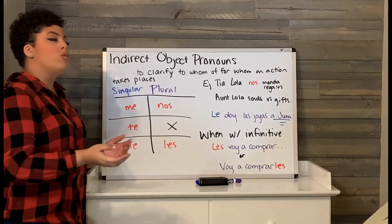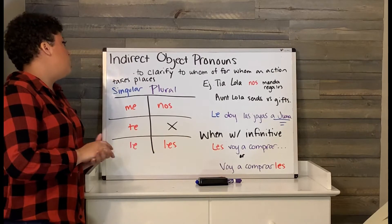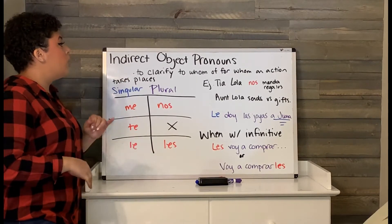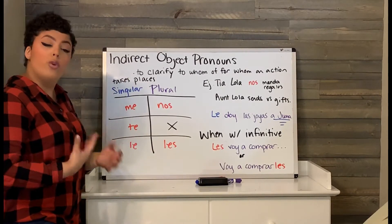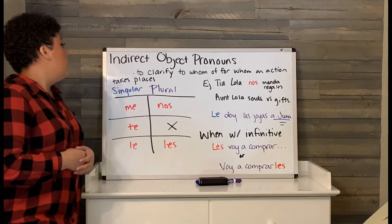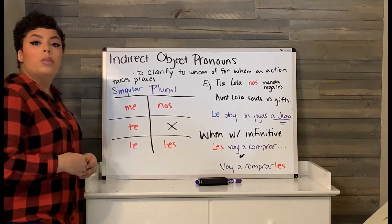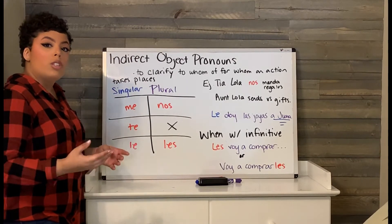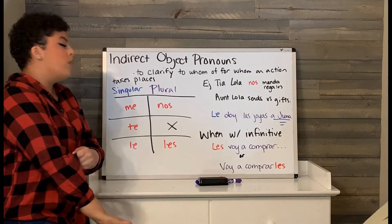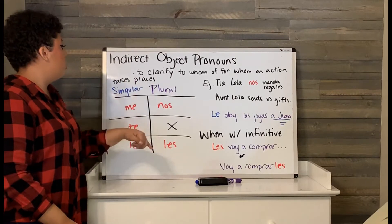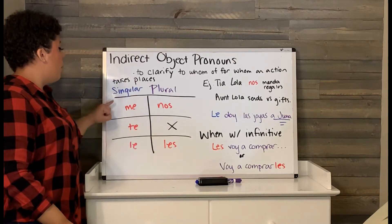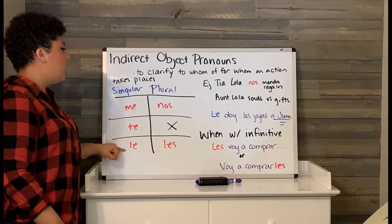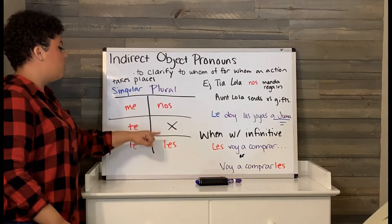So, what is an indirect object pronoun? They are used to clarify to whom or for whom an action takes place. Just like direct object pronouns, we have our little chart here for singular and plural. So we have: me, te, le, nos,